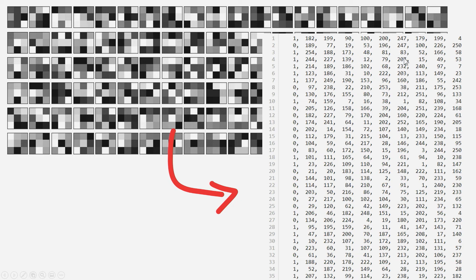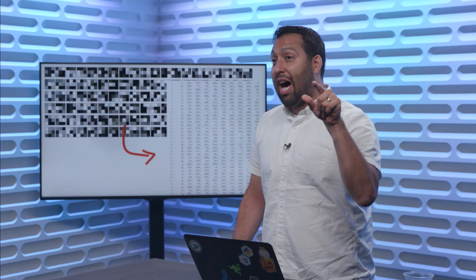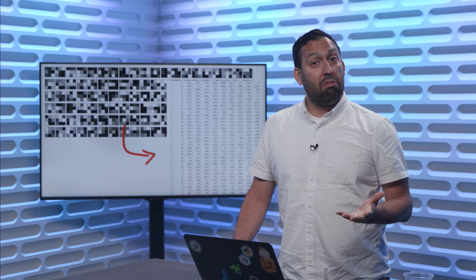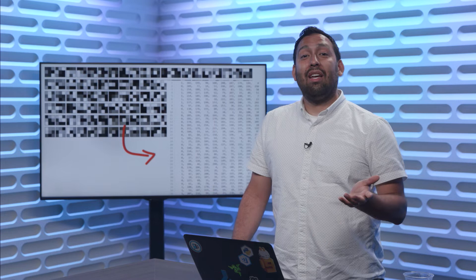Let your programmer lizard brain go free. Some of you are thinking: if you take the average of the top three and the average of the bottom three and compare them, you would know. Mathematically speaking, since dividing both by three is redundant, you can add the top three, add the bottom three, and whichever one is greater, that's what you return.